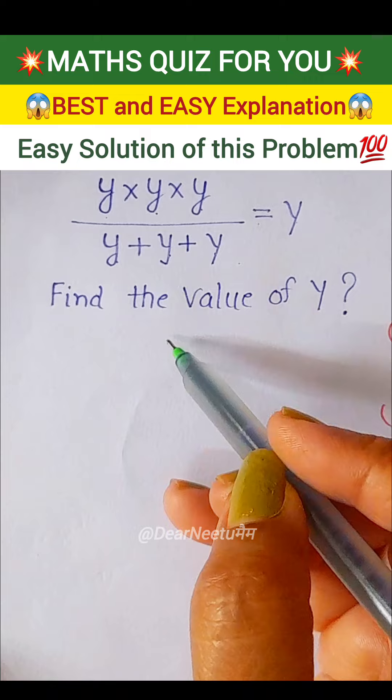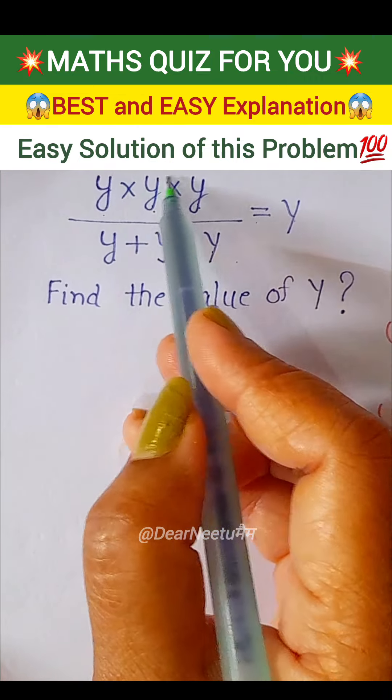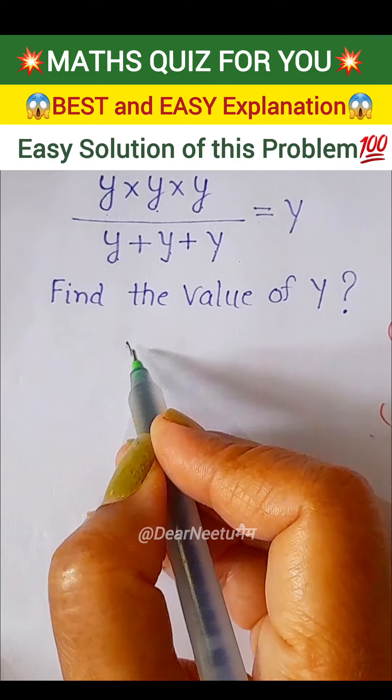Y into y into y - if the numbers are multiplied, their powers are added, so this becomes y to the power 3.